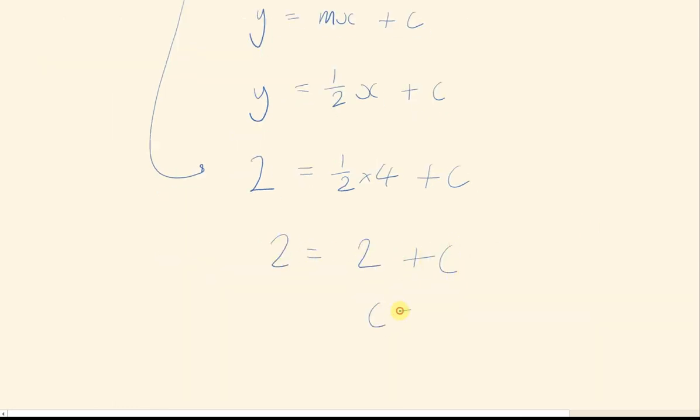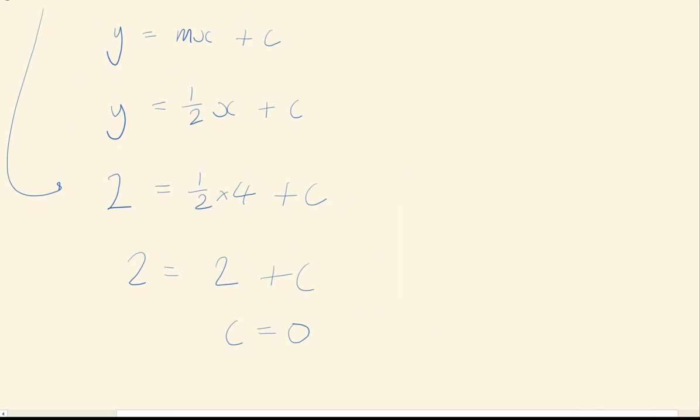Half times 4 is just 2. So I have 2 equals 2 plus c. Therefore, c is 0. So my final equation is just y equals 1 half x, or 1 half x plus 0 redundantly.